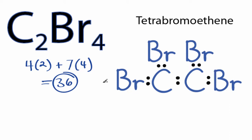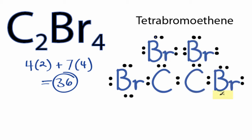Then we'll go around the bromines to complete their octets, or until we run out of valence electrons. So we have 10, 12... and 34, and then we'll put the remaining two here in the center on a carbon — 36.